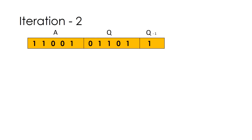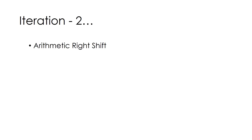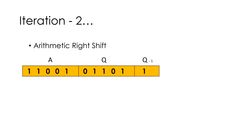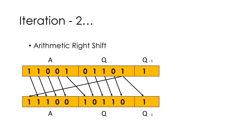Now perform the second iteration. The row contains A, Q, and Q minus 1. We check the last bits of Q and Q minus 1, which are 1 and 1. Thus, there will be no operation — no change in values of A, Q, and Q minus 1. Then we perform the arithmetic right shift. The row below contains the new values of A, Q, and Q minus 1 after the arithmetic right shift.